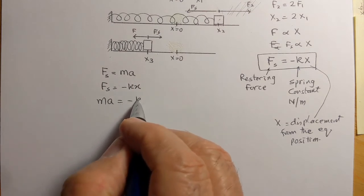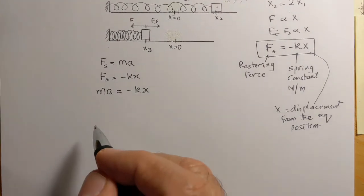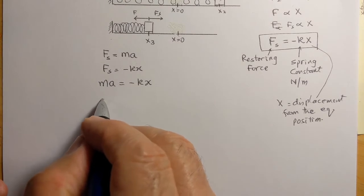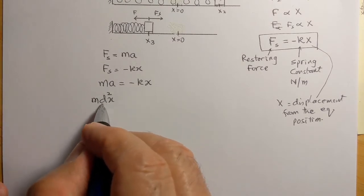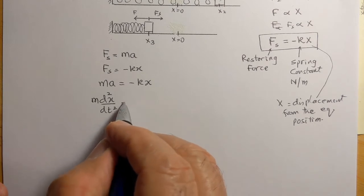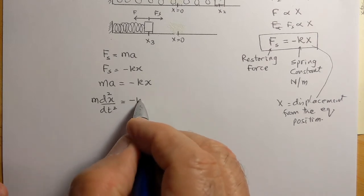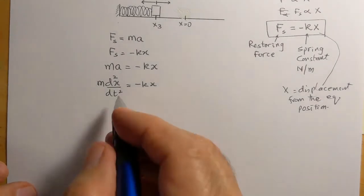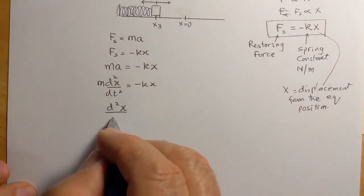is going to be equal to -kx. Now, the acceleration is the second derivative of position, so it's m d²x/dt² equals -kx, or d²x/dt²